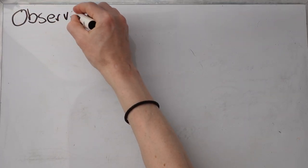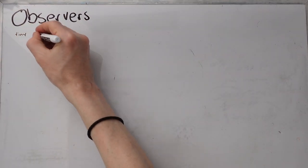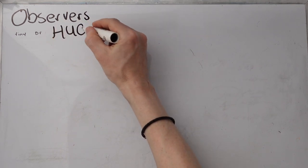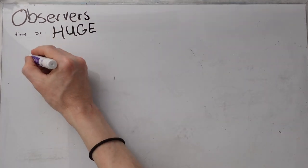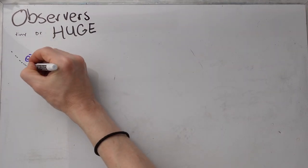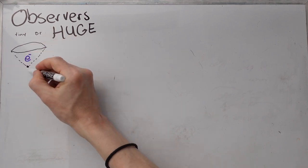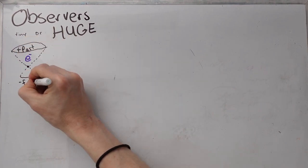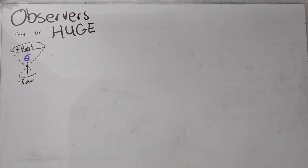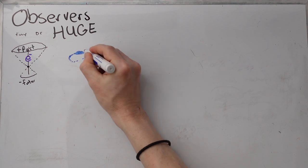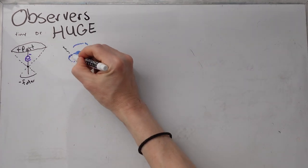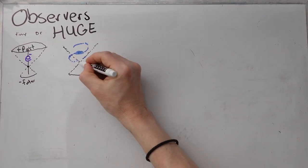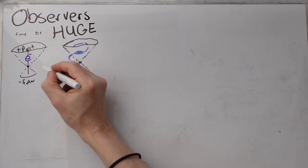I'd like to talk about observers and be very clear about what I'm talking about. They can be either tiny or huge. So tiny would be like an electron, which is a point particle. Can't get much tinier than that. We've got the positive number past and the negative number future. Or you could go really big, galaxies.